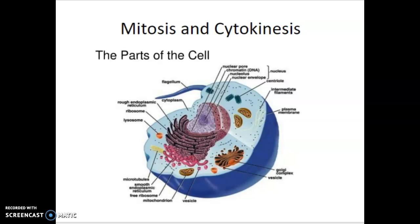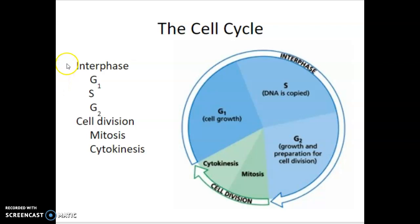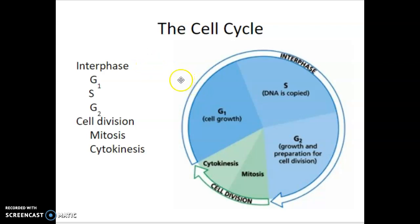When the cell is just going about its regular business, it's in what we call interphase — just regular cell life. If a cell decides to replicate, it will go through cell division, mitosis, and cytokinesis. Keep in mind that a cell can stay in interphase for the rest of its days. Interphase can be broken down into three parts: the G1, S, and G2 phases.